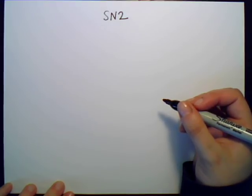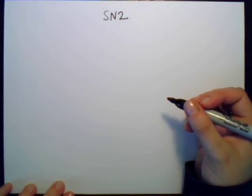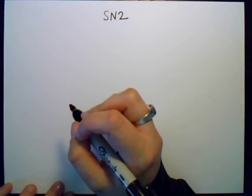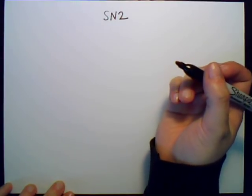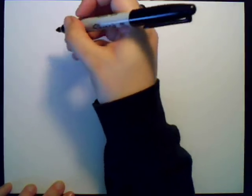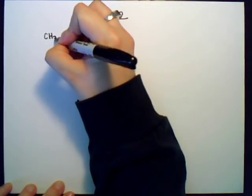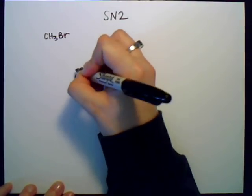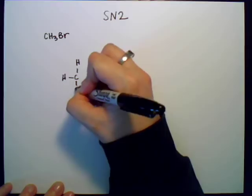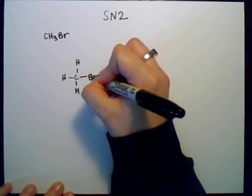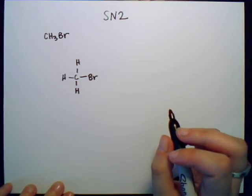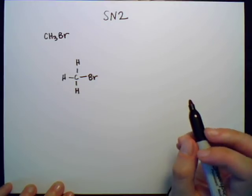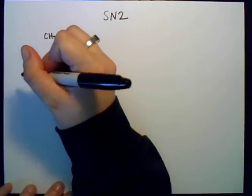Now I'm going to go ahead and draw an SN2 reaction for you so you can see an example of how this works. Let's say, for example, we start with methyl bromide, which has the formula CH3Br. I'm going to draw it out with all the hydrogens so that you can see exactly what's going on here. And let's say that we have this methyl bromide in some OH minus.